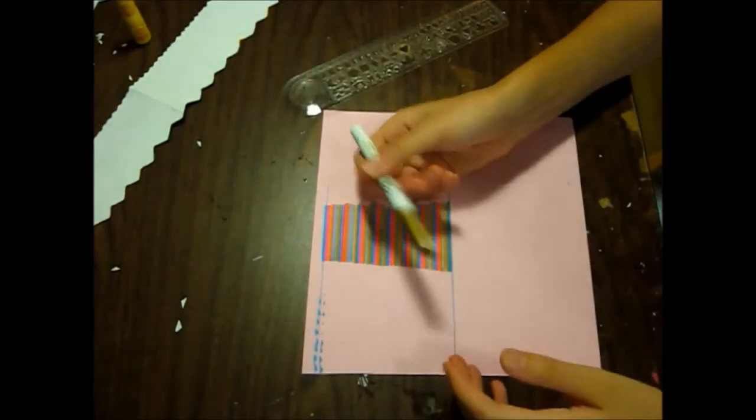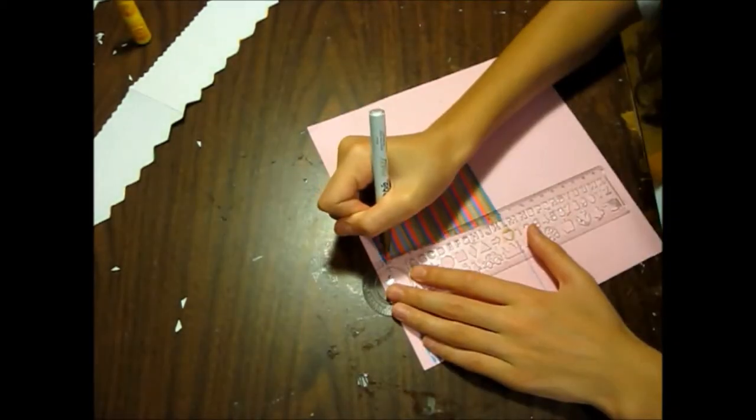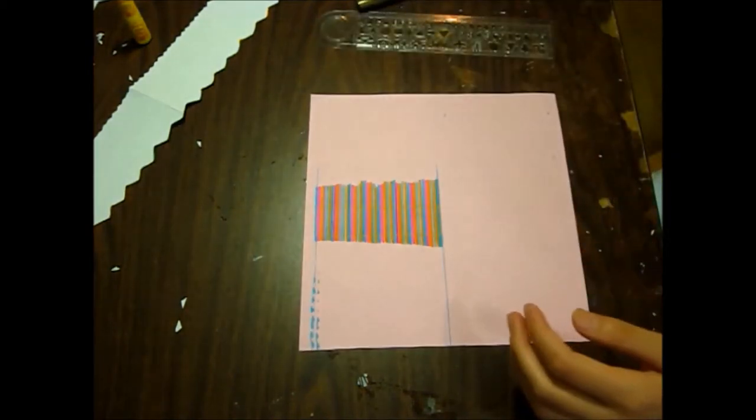And then I took the gold marker, and drew a border around it. Now take your scissors, and cut out the rectangle that you drew.